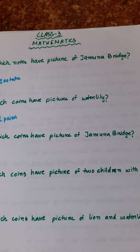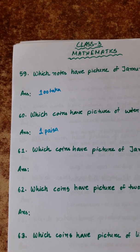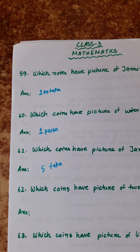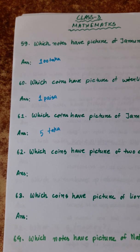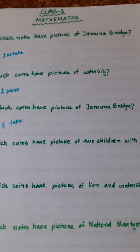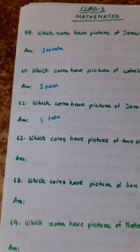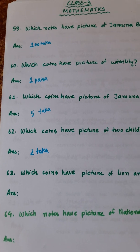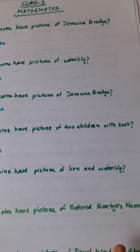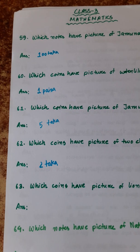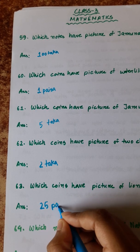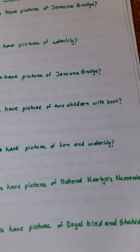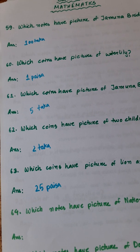Number 61: which coins have the picture of Jamuna Bridge? It will be the 5 taka coin. Number 62: which coins have the picture of two children with a book? It is the 2 taka coin. Number 63: which coins have the picture of lion and water lily? It is the 25 paisa coin.